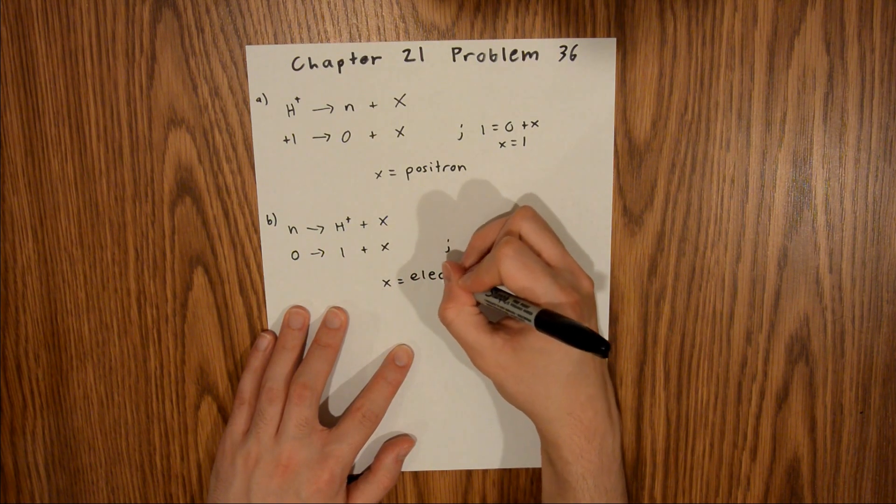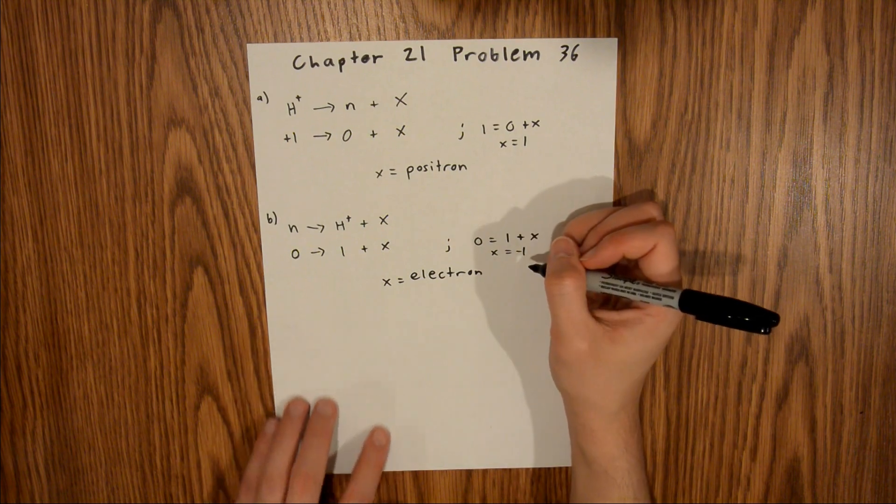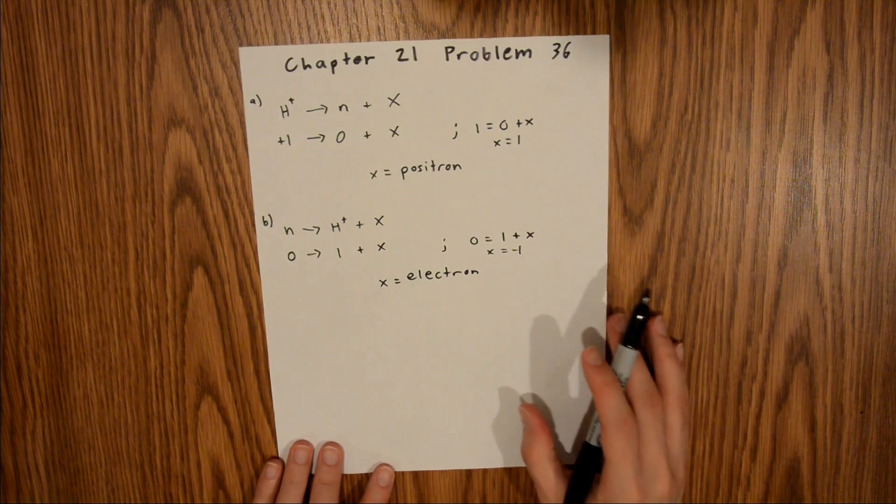because electrons have a charge of minus 1. And so that is your final answer for Part B.